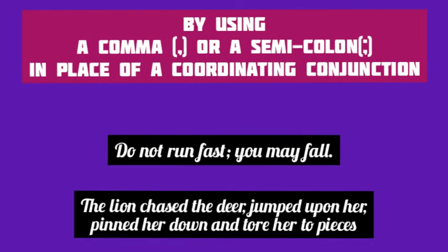Interestingly, sometimes a comma or a semicolon is used in place of a coordinating conjunction to combine two or more simple sentences into a compound sentence. In the first example, a semicolon is used in place of the coordinating conjunction 'or,' joining the two independent clauses: 'Do not run fast; you may fall.' However, we cannot combine more than three simple sentences using a comma or semicolon. Example: 'The lion chased the deer, jumped upon her, pinned her down and tore her to pieces.'